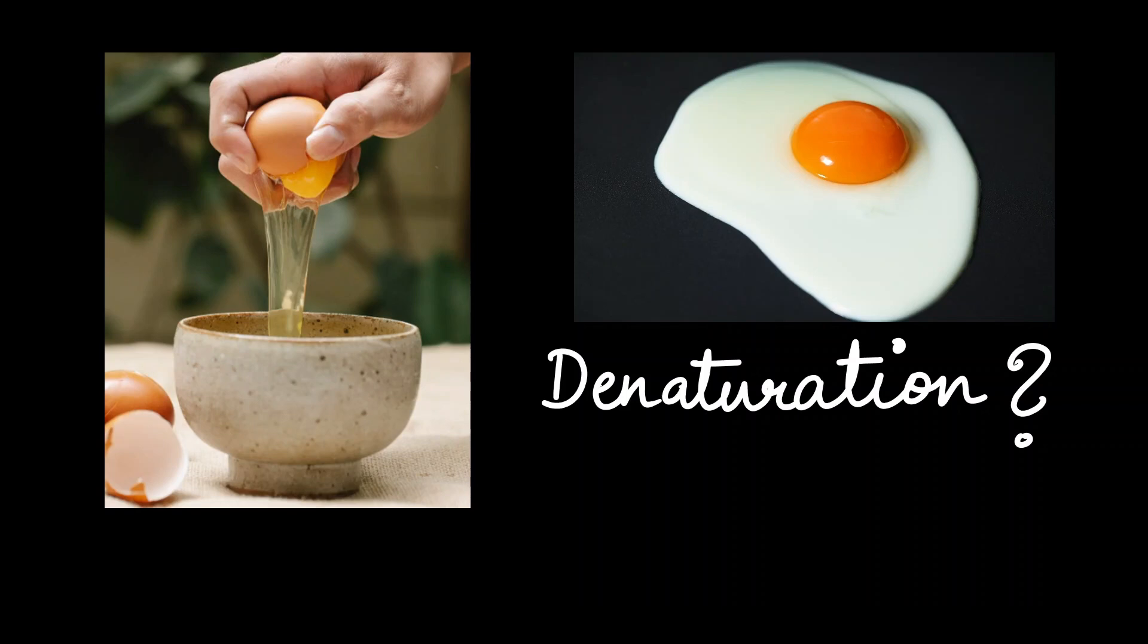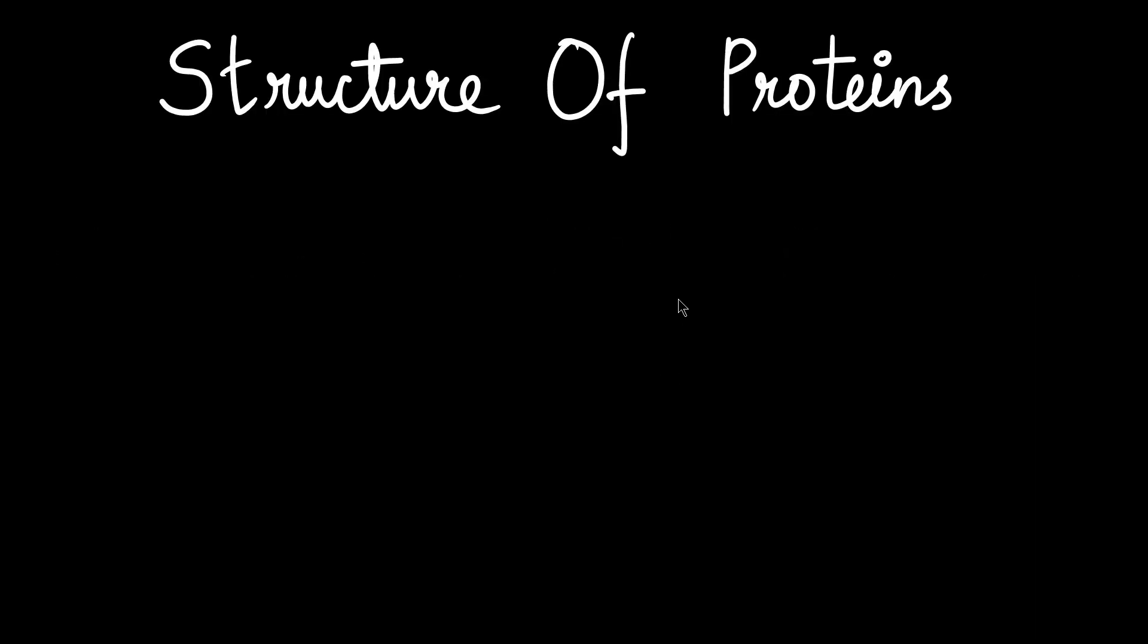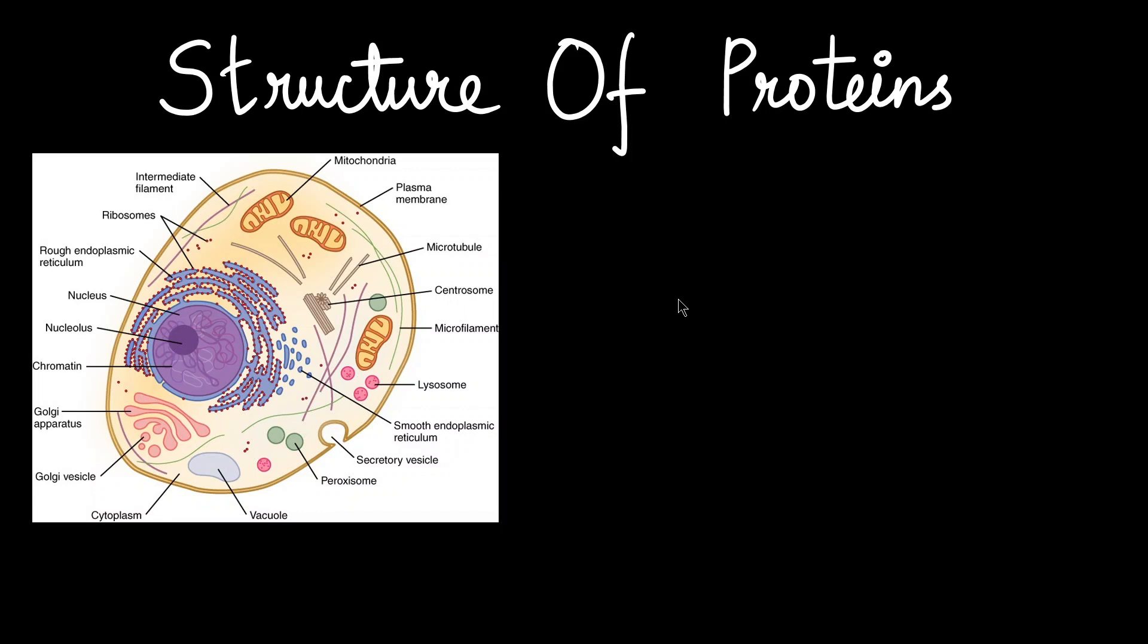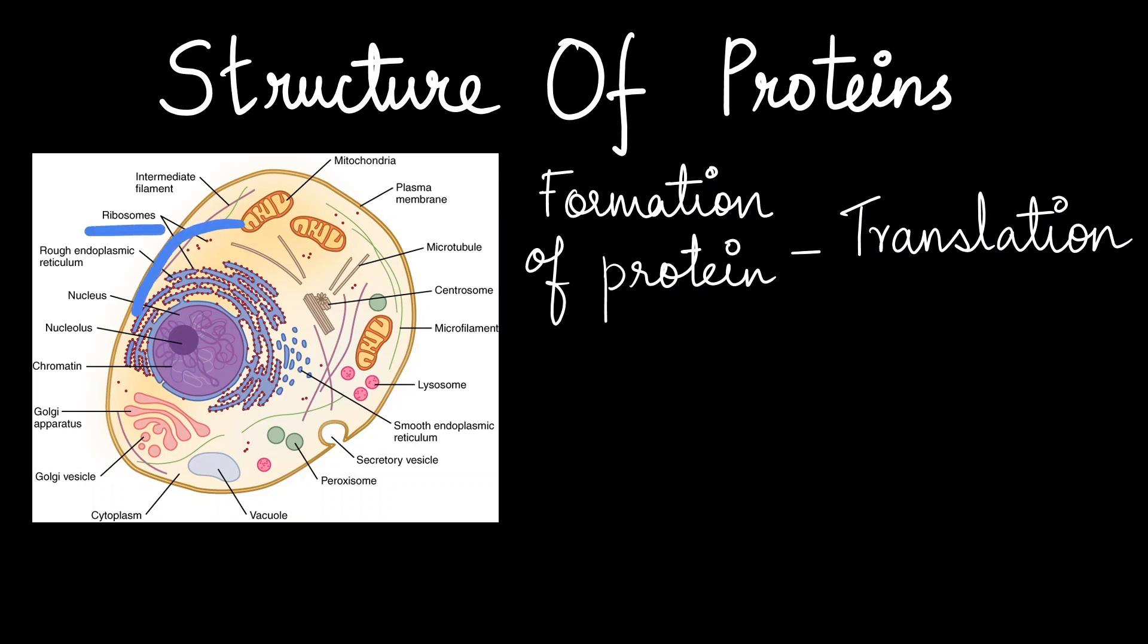This video is for learning about protein structures and how they form. At the cellular level, proteins are produced by the process of translation in these minute organelles called ribosomes.